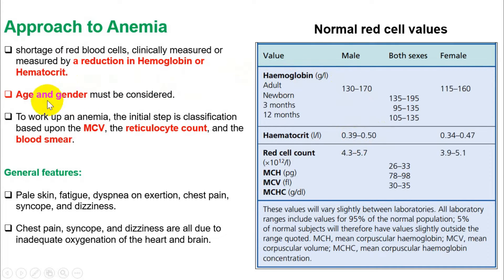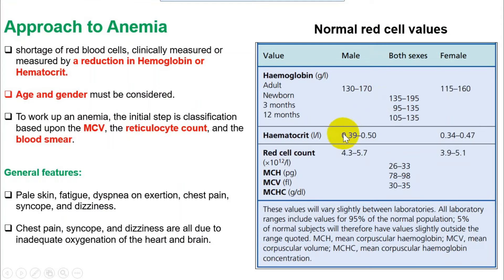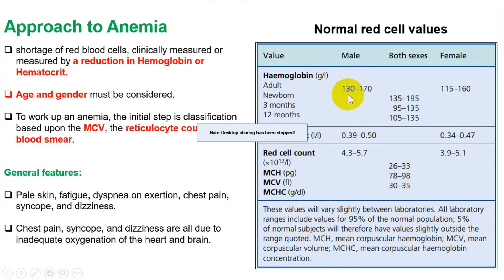When interpreting these values, age and gender must be considered. Normal hemoglobin in males is 130–170 g/L; in females these values are a little bit lower because females have menses every month and lose blood. A newborn has different values as well. Clinically, anemia is diagnosed by looking at hemoglobin or hematocrit values. Note that UK exams (like PLAB) use grams per liter, while USMLE uses grams per deciliter — but normal values are always provided in the question.